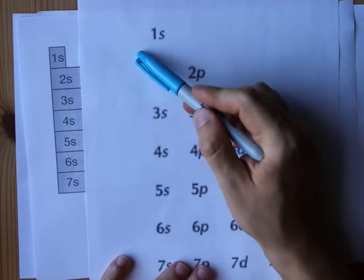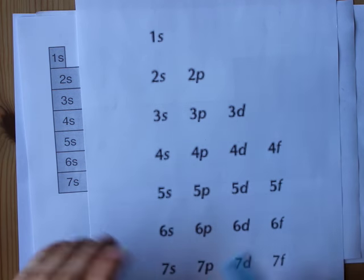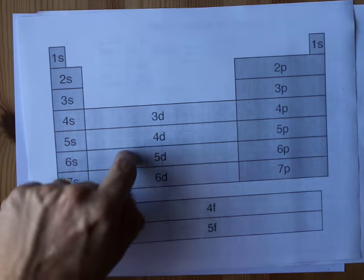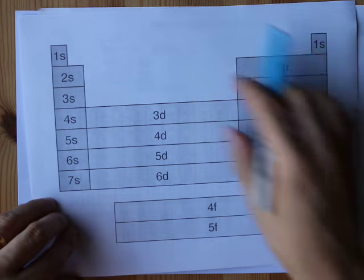And then you draw diagonal lines, 1s2, 2s2, 2p6, 3s2, 3p6, 4s2. I don't like that. I like just knowing this and creating my electron configuration off of this.